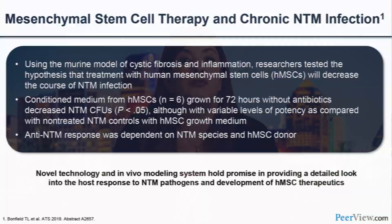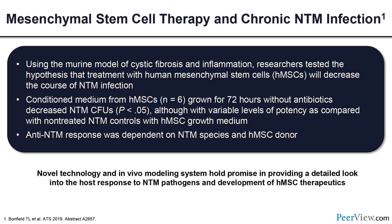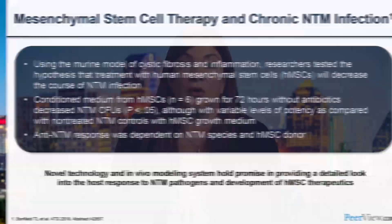This study describes the use of mesenchymal stem cell therapy in chronic NTM infection, using a murine model of cystic fibrosis and inflammation. Researchers tested the hypothesis that treatment with human mesenchymal stem cells would decrease NTM infection burden. Using conditioned medium from human mesenchymal stem cells grown for 72 hours without antibiotics, they found a statistically significant decrease in NTM CFUs compared to non-treated NTM controls. This novel technology and in vivo modeling system holds promise in developing human mesenchymal stem cell therapies in the future.